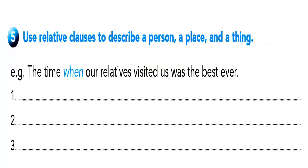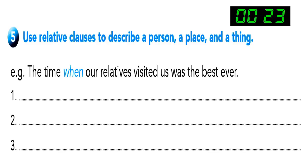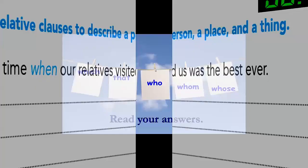Now with exercise number five: use relative clauses to describe a person, a place, and a thing — for example, the time when our relatives visited us was the best ever. Take your time and think about these points.